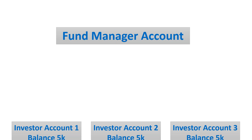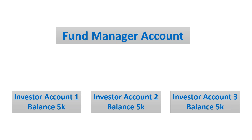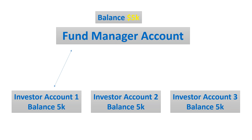If we were to introduce three investor accounts — it could have been four, five, or ten, the amount doesn't matter — and each investor account in this example has a balance of $5,000 each. While none of them are connected, the manager balance remains at zero. As soon as we connect the first account, the manager balance is now $5,000. The second account connected brings it to $10,000, and when the third account is connected, the balance jumps up to $15,000.